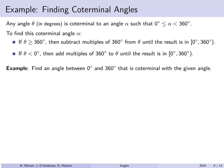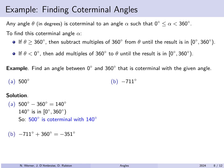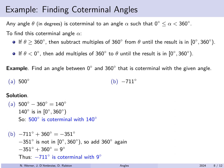For example, find an angle between 0 and 360 coterminal with each given angle. First, 500 degrees: since 500 is larger than 360, subtract 360 to get 140 degrees, which is in range. So 500 degrees is coterminal with 140 degrees. Second, negative 711 degrees: it's negative, so add 360 to get negative 351 — still negative. Add 360 again to get 9 degrees, which is within 0 to 360. So negative 711 degrees is coterminal with 9 degrees.